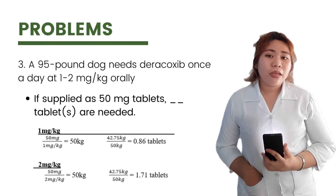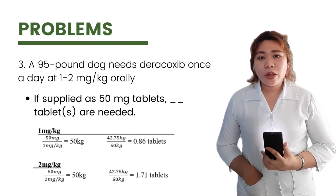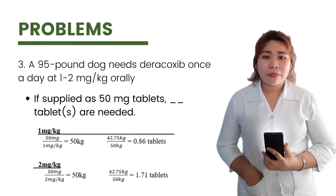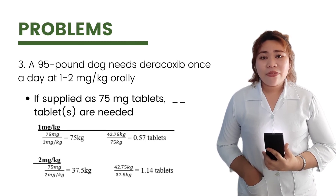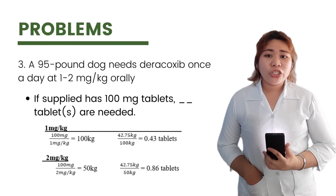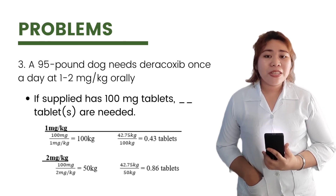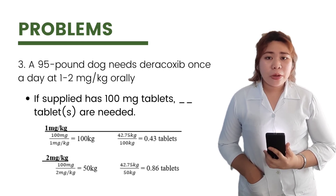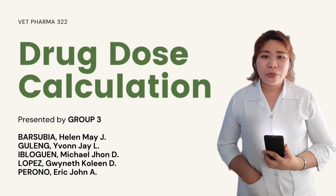If supplied as 100 mg tablets, how many tablets are needed? At 1 mg/kg, 0.43 tablet of deracoxib is needed, and at 2 mg/kg, 0.86 tablet is needed — both once a day orally. And that ends our video on drug dose calculations. Once again, this is Helen May Bersubia with my group members from Group 3 of 3DVMA. Thank you so much for watching and stay safe.